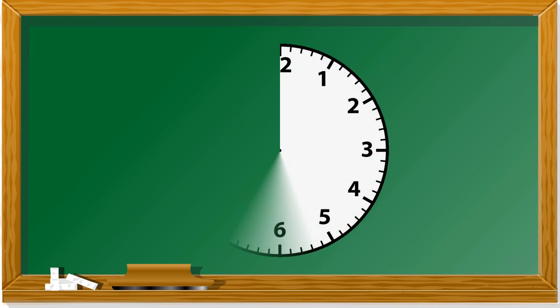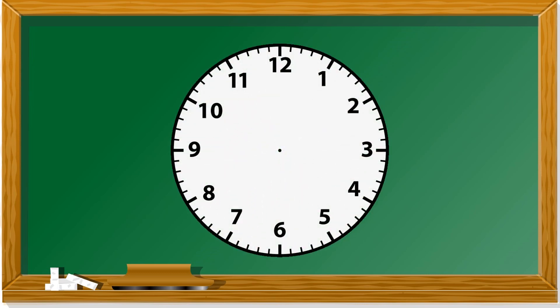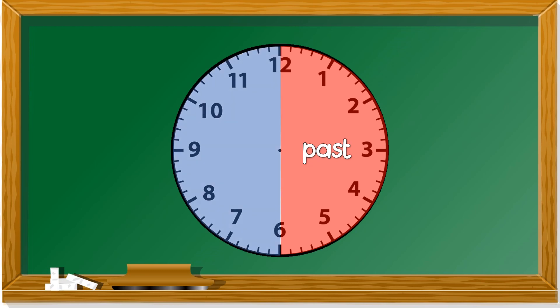Remember: when the minute hand is between 12 and 6, you use 'past.' But when the minute hand is between 6 and 12 — this area — you say 'to.'